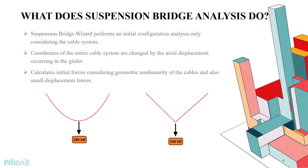Now, what exactly does a suspension bridge analysis control do? Consider a chain of beads — if we apply a 100 kilonewton point load at the center sag position, the shape of the elements shifts from a catenary to a V shape. This is exactly what the suspension bridge analysis control does: it changes the coordinates of the entire cable system and calculates the initial forces according to geometric nonlinearity, considering both large and small displacement forces.